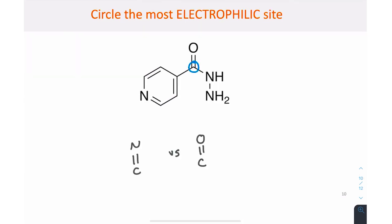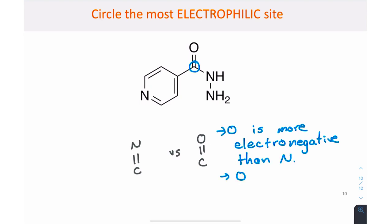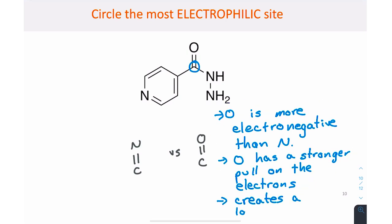We can rank electrophilic sites in an analogous way. When we compare the CO and the CN pi bonds, the more electronegative oxygen atom has a stronger pull on the electrons, making its carbon atom more electropositive and therefore more electrophilic.